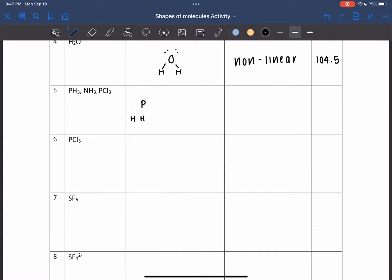PH3, NH3, and PCl3 are examples of three bond pairs and one lone pair. It is called pyramidal shape. It has a bond angle of 107 degrees.